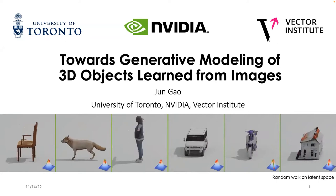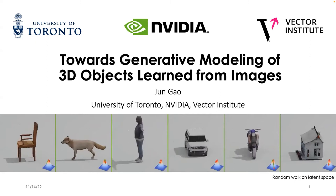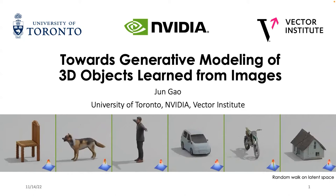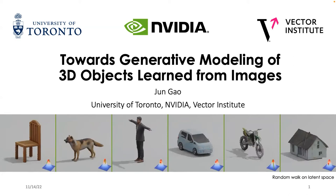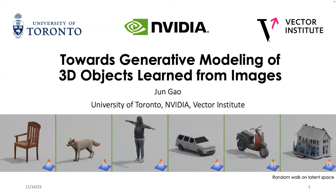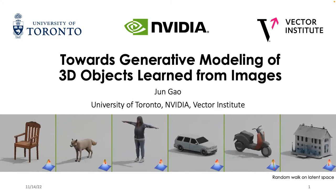Hello everyone, welcome back to our Toronto AI and Robotics Lab seminar. Today we are glad to have Jun Gao to give a talk on 'Towards Generative Modeling of 3D Objects Learned from Images.' Jun Gao is a PhD student at the University of Toronto with Professor Sanja Fidler, and also a research scientist at NVIDIA's Toronto AI Lab. He obtained his specialist degree from Peking University in 2018.